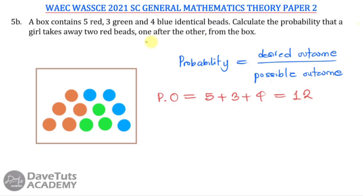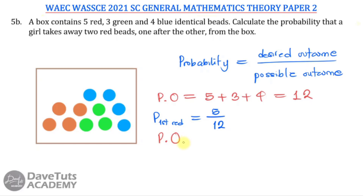We are told the balls are taken one after the other, so we look at each pick separately. For the first red ball, there are five red balls out of 12 total, giving a probability of 5 over 12. After removing that first red ball, the total becomes 11 and the number of red balls remaining is four, so the probability of picking a second red ball is 4 over 11.